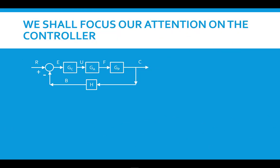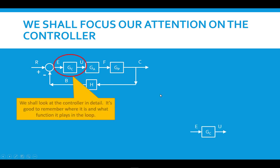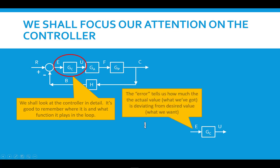We're going to focus our attention on the controller in this video. We're going to pull it out of the system, but we need to remember where the controller sits in the standard control loop. Basically, it takes an input signal called the error, which is a comparison of the actual value with the reference value, and then produces a signal that goes downstream to the actuator. The actuator acts and changes the plant's operation so that the actual value is more in line with the reference value.